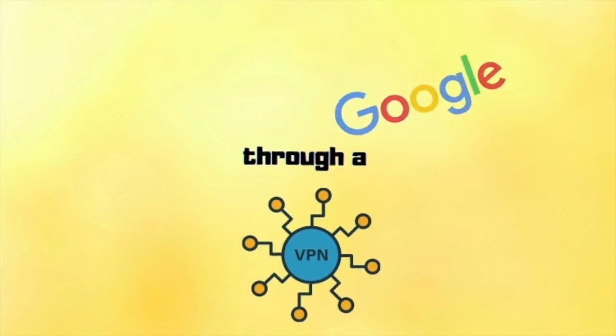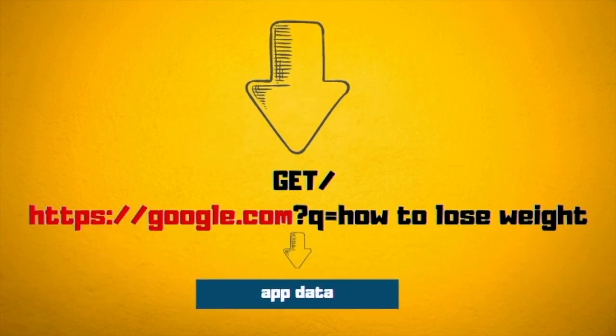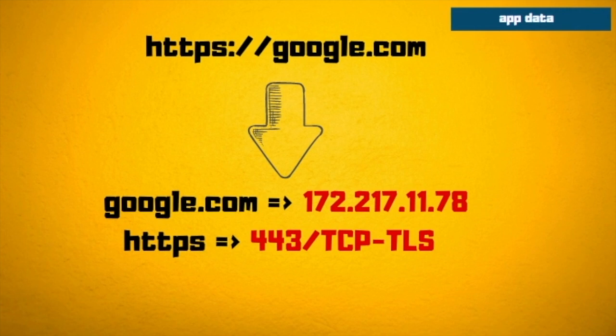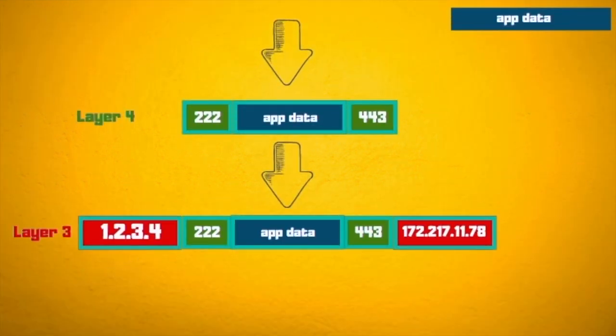When you search Google through a VPN, the first thing you type — your search term — gets translated to a GET request against https://google.com with a query parameter. That is your layer 7 application data. We can then extract the IP address of google.com and the protocol through HTTPS, which is port 443 TCP on TLS. That becomes your application data, which will be padded with the destination port, source port, and that becomes an IP packet padded with the destination IP address of google.com.